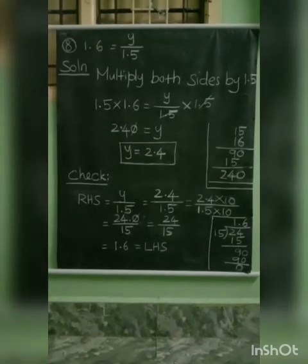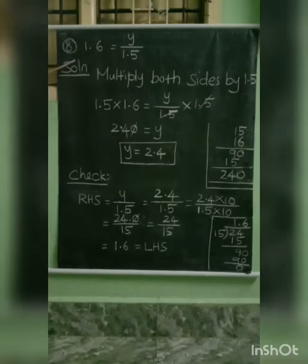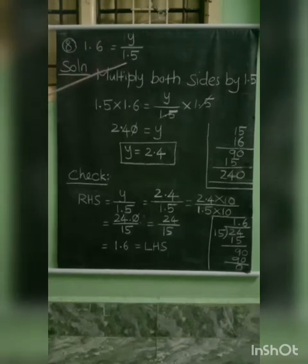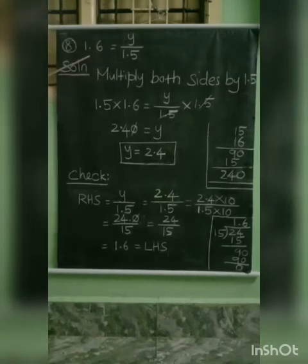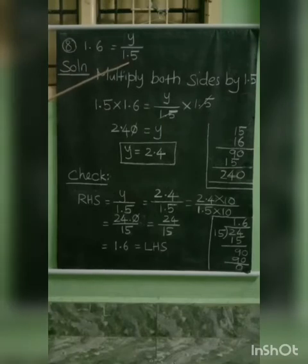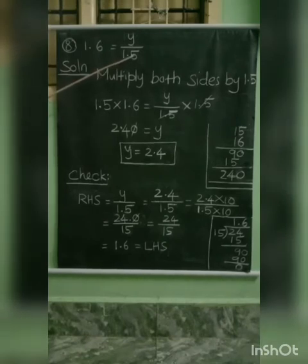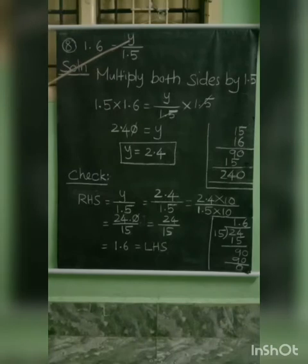Next step, 8th sum: 1.6 equal to y by 1.5. This is the right hand side of the given equation. The left hand side has a constant, and the right hand side has an expression with only one term — that is y by 1.5. So, the variable is on the right hand side.